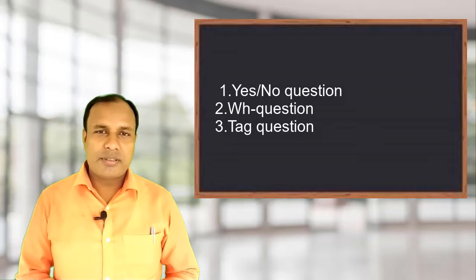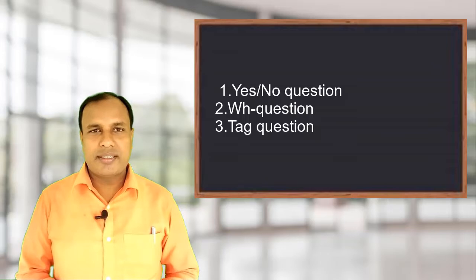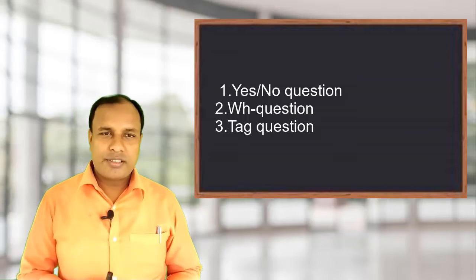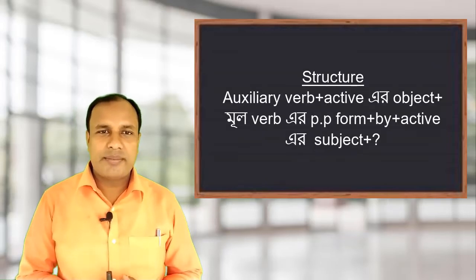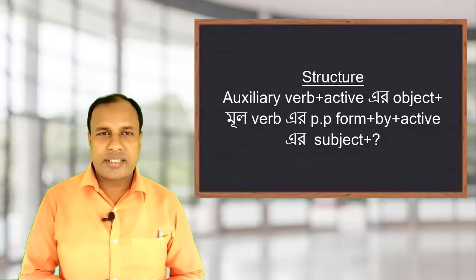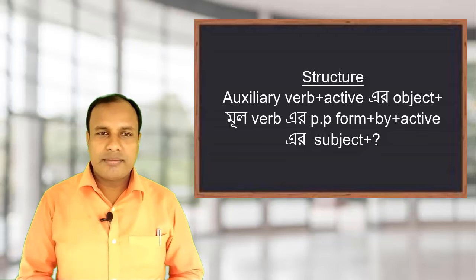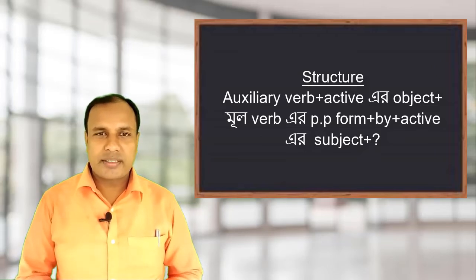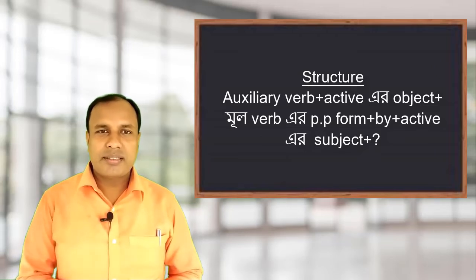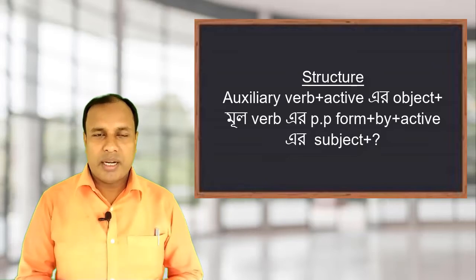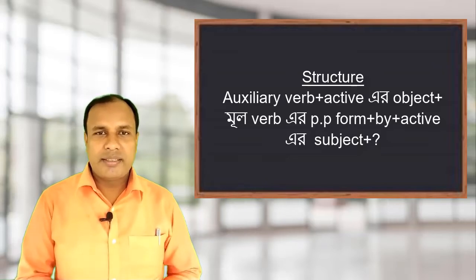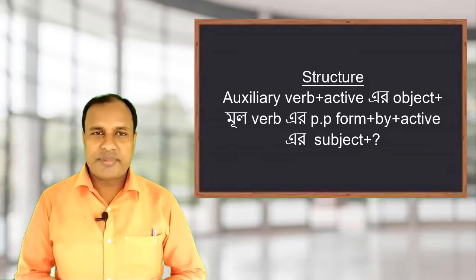Now, for yes/no questions, to change an interrogative sentence to passive voice, we use the structure: Auxiliary verb plus active object plus main verb past participle form plus 'by' plus active subject.